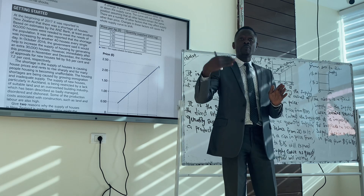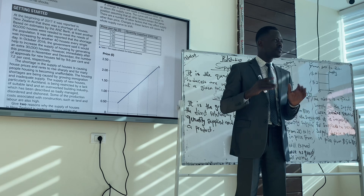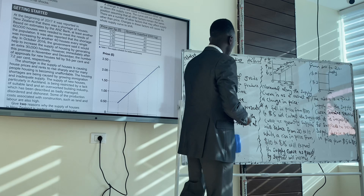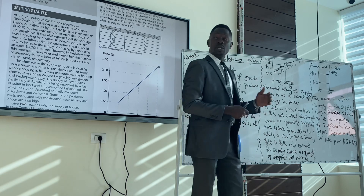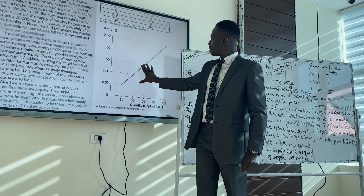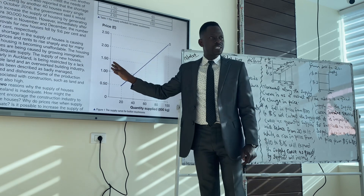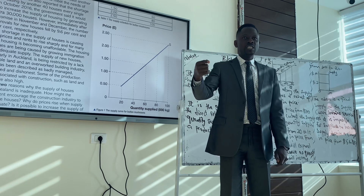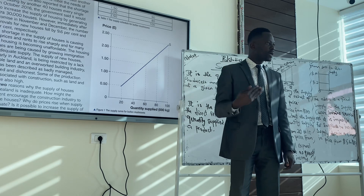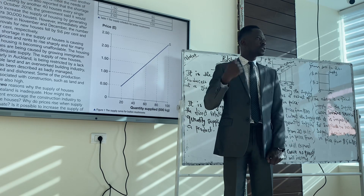When the price is increasing, supply will increase. When the price reduces, supply will reduce. That's why it's a direct relationship. There's always a movement along the supply curve because price will change and quantity supplied will change. A change in price could be an increase or a reduction. A change in quantity supplied could be an increase or a reduction.